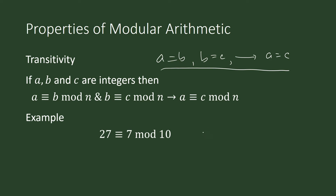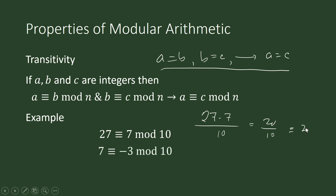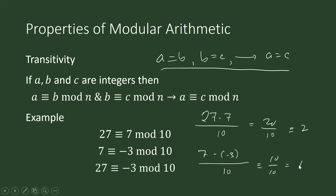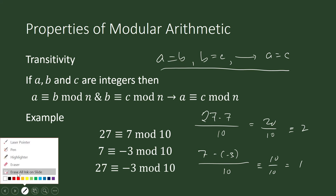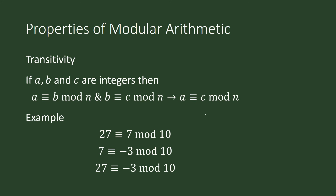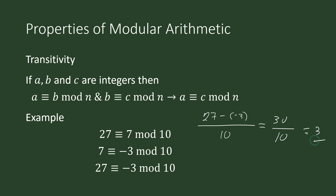For example, 27 is congruent to 7 mod 10 — we verify that this is true. And 7 is congruent to negative 3 mod 10 — this is again true. Therefore, by transitivity, 27 is congruent to negative 3 mod 10. Let us verify: 27 minus negative 3 is 30, and 30 divided by 10 is 3, which is an integer, so this is true.